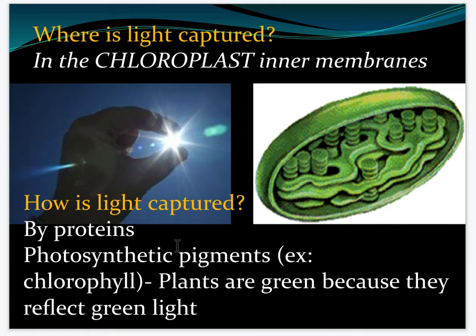Green light just reflects off, but all the other wavelengths of light the plant takes in to make use of them all. That's why plants look green — because they're reflecting green light. In eukaryotes, photosynthesis happens in the chloroplast.